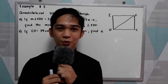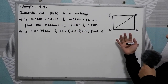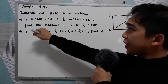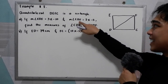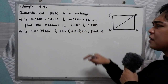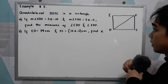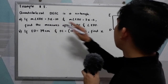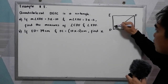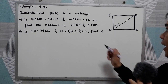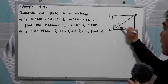Now let's have example number 2. Quadrilateral D-E-F-C is a rectangle. Letter A: if the measure of angle E-D-F is equal to 3x minus 10, and the measure of angle C-D-F is equal to 2x minus 5, find the measures of angle C-D-F and angle E-D-F.